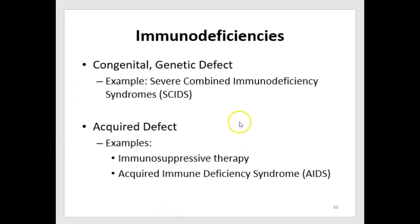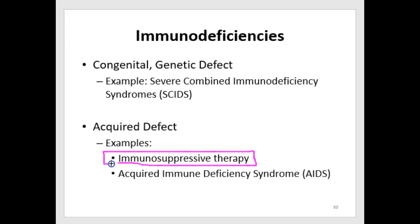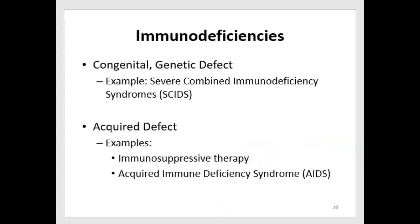Now let's go to immunodeficiency examples that are acquired — something you're not necessarily born with. One example is when you're given immunosuppressive therapy for one reason or another, such as for autoimmune disorders or transplant. But the more familiar example of an acquired immunodeficiency is AIDS — Acquired Immunodeficiency Syndrome.